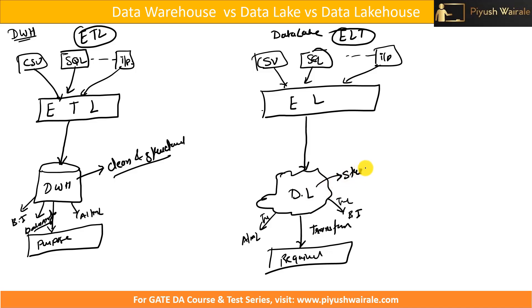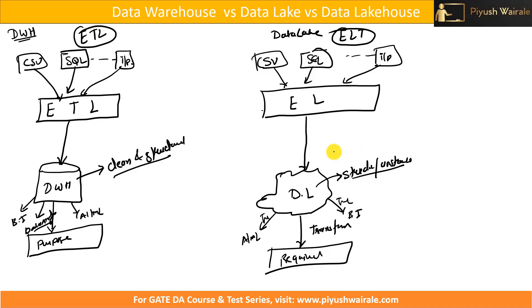In a data lake, we directly extract and load the data, so it can be structured or unstructured data as well. A data warehouse is used when you have a fixed purpose — you know what data you need. In an organization with multiple departments, you take data from multiple departments and store it into a centralized data warehouse for different purposes. Similarly, in a data lake, data comes from multiple sources and is directly stored, then transformed according to requirement.